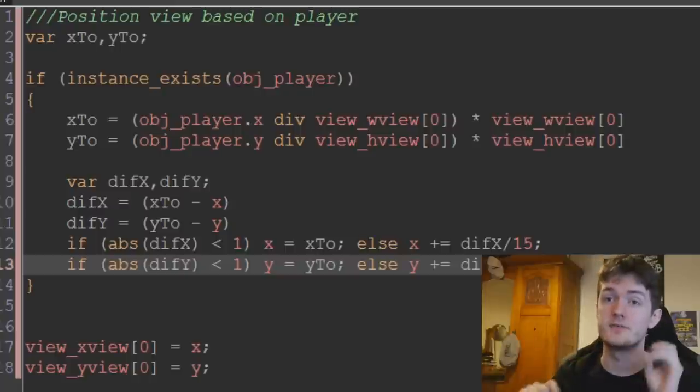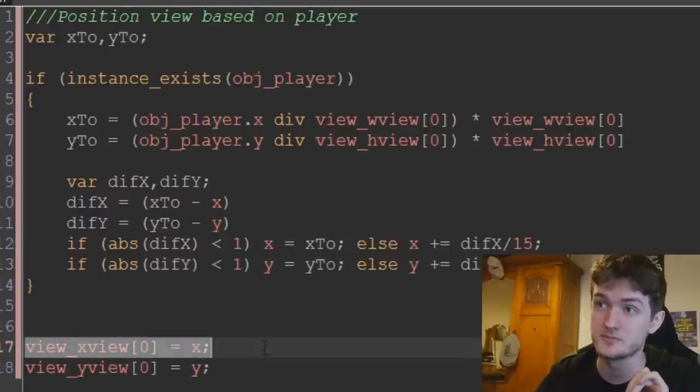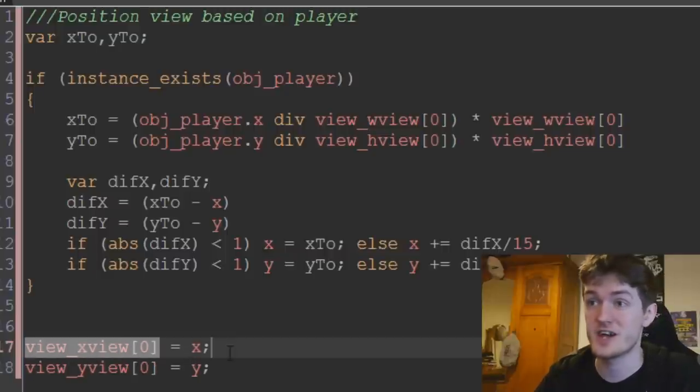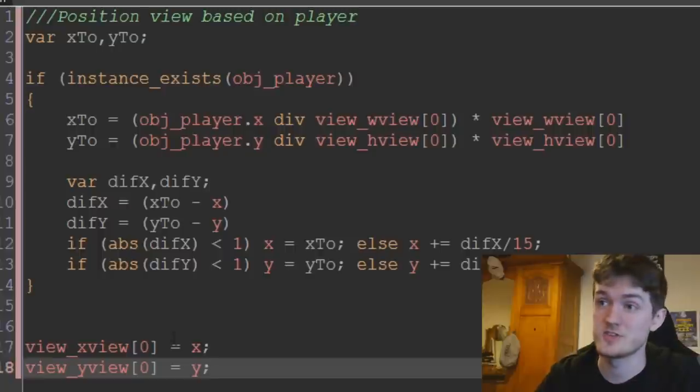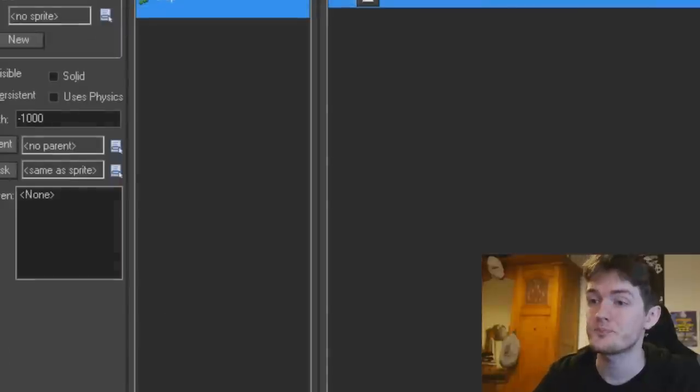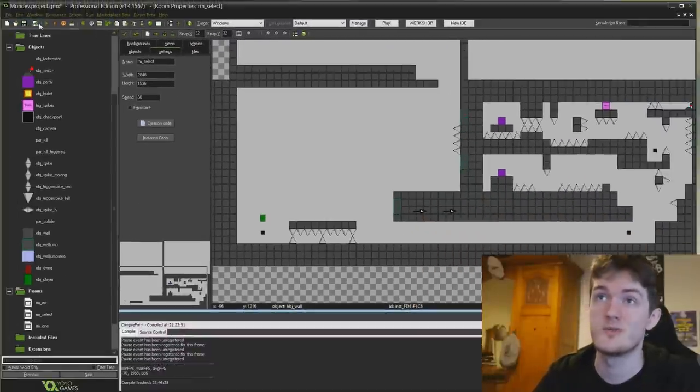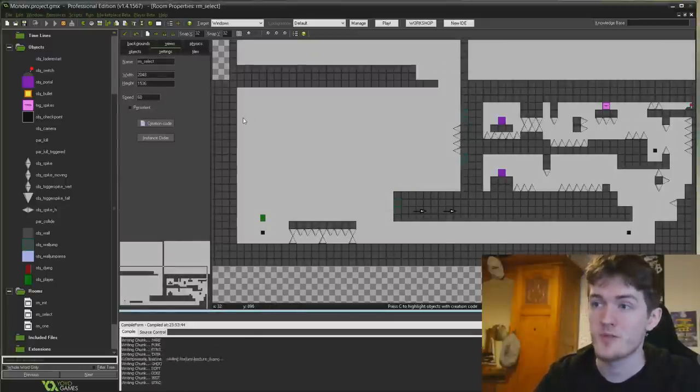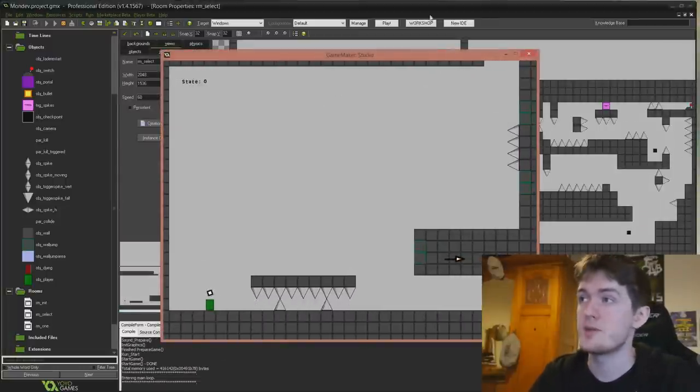And then once we've done that, we've got the x-position that the camera wants to be in, and the view, all we have to do at the end is just say view_xview[0] equals x, and view_yview[0] equals y. Just changes the x and y position of the view to be whatever one that we've worked out for this camera. Alright, simple as that. One event, like 20 lines of code or something. And it creates a cool camera.